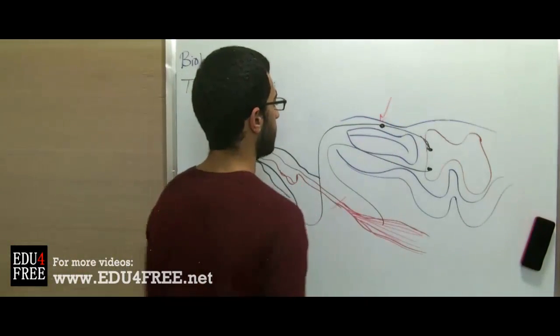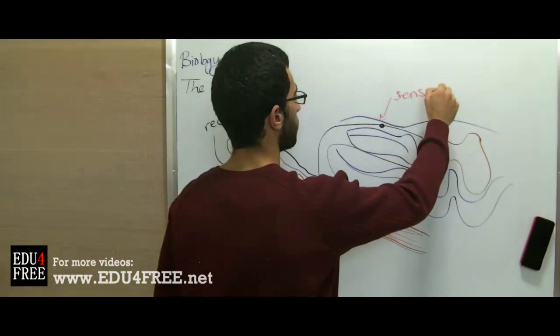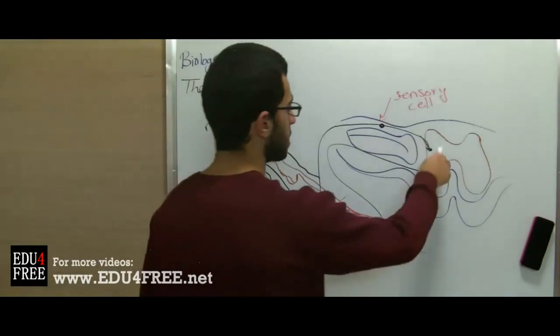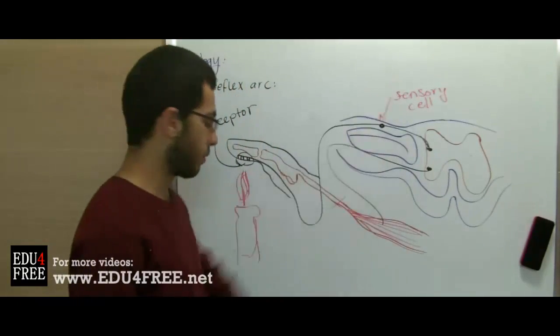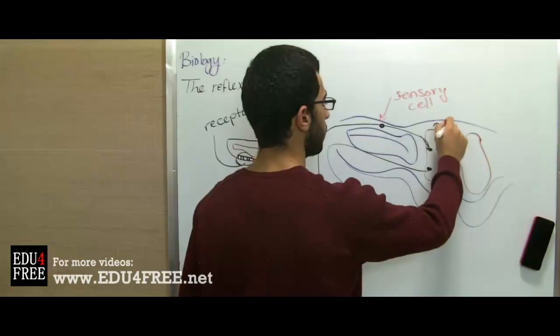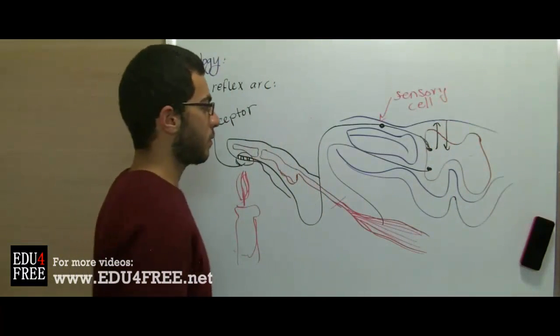Let's say that it may meet another sensory cell, which transmits the impulse till it reaches the gray matter. Now, it reaches the gray matter, so it goes upwards to the brain, and then it goes downwards again with the proper response that the brain gave, all of this through the gray matter.